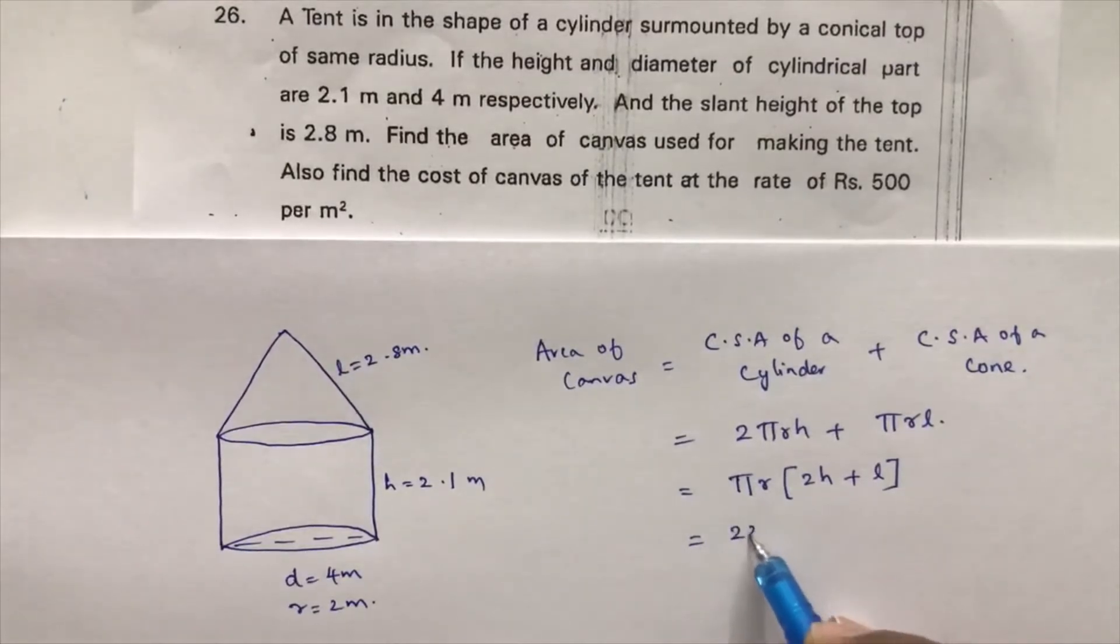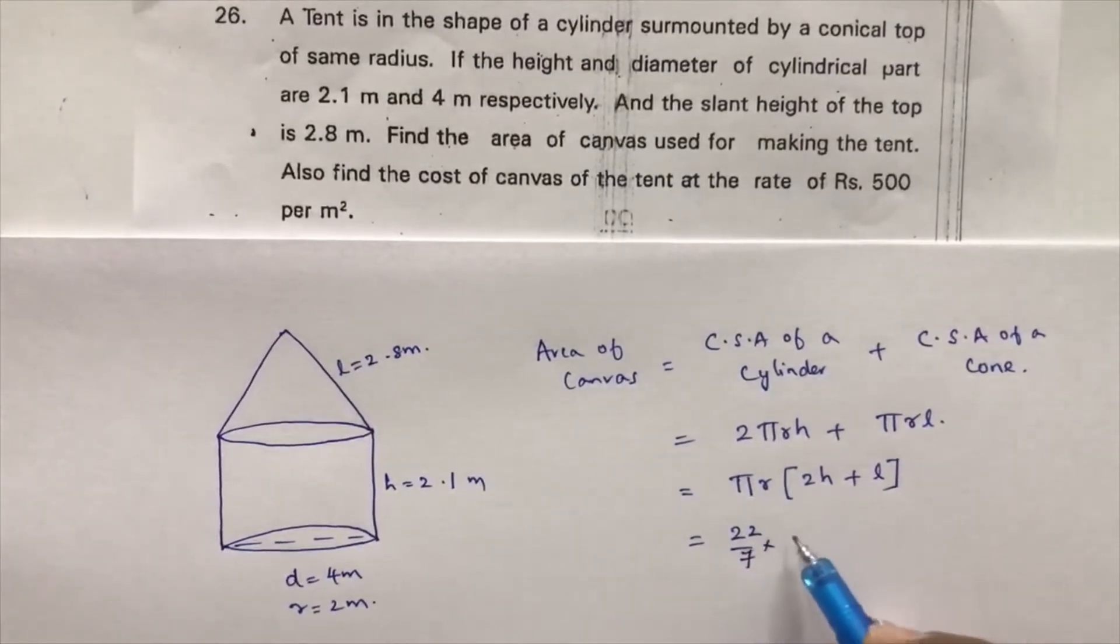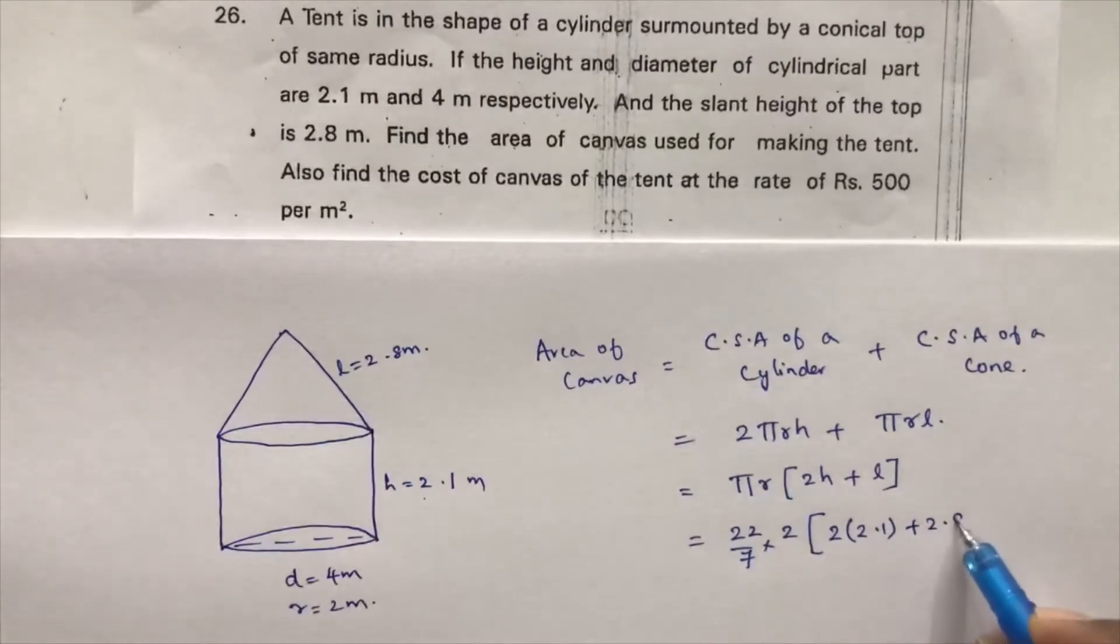So π is 22/7 into radius is 2, 2 times height, height is 2.1 and slant height is 2.8. Now here if we simplify 22/7 into 2 into 2.1 is 4.2 plus 2.8.